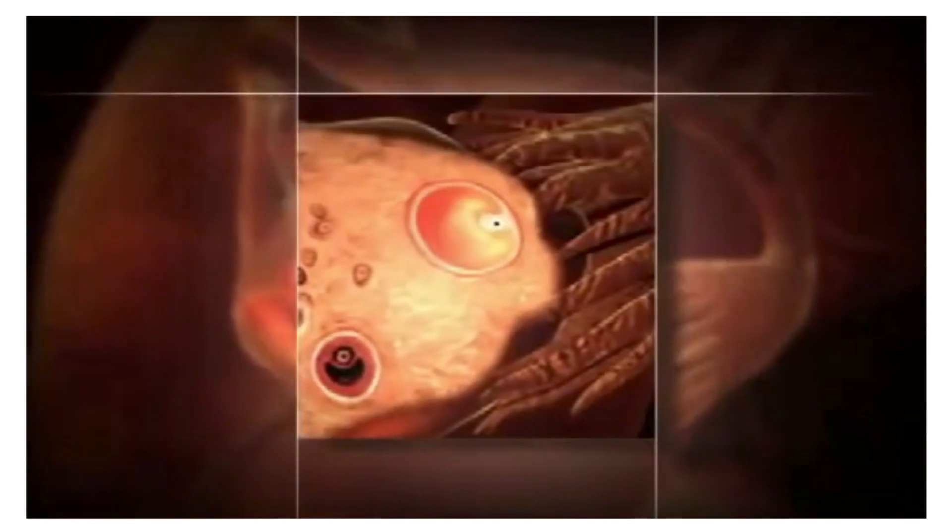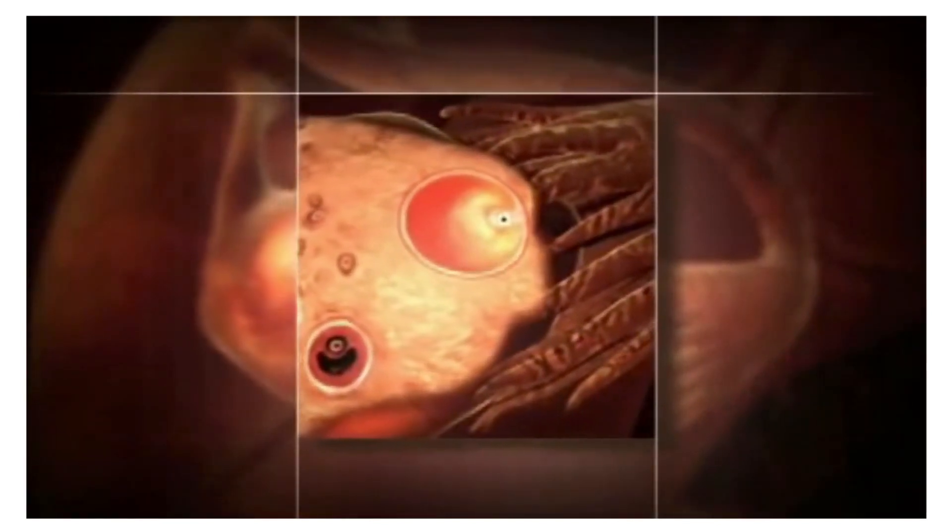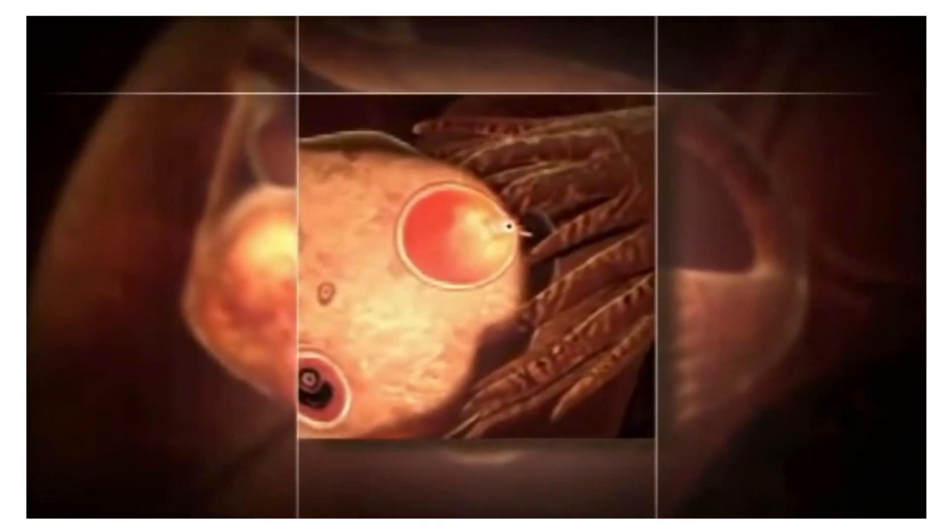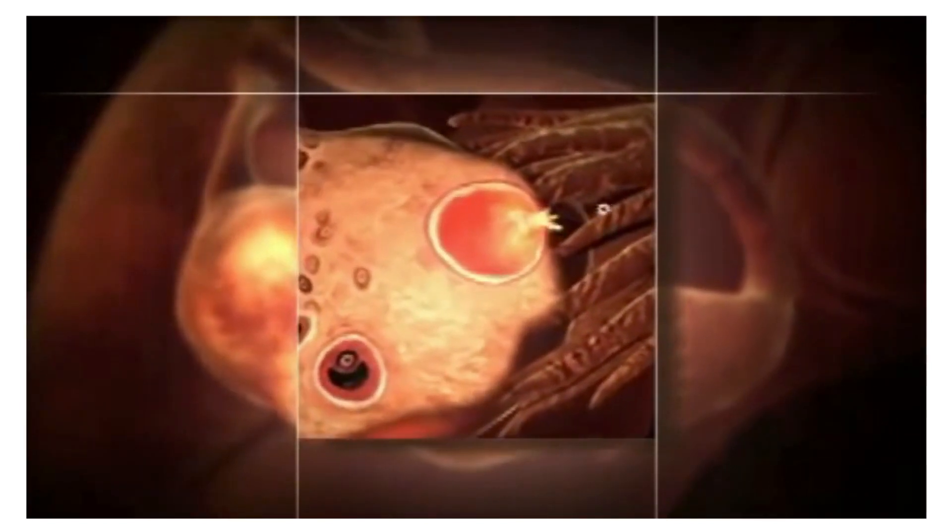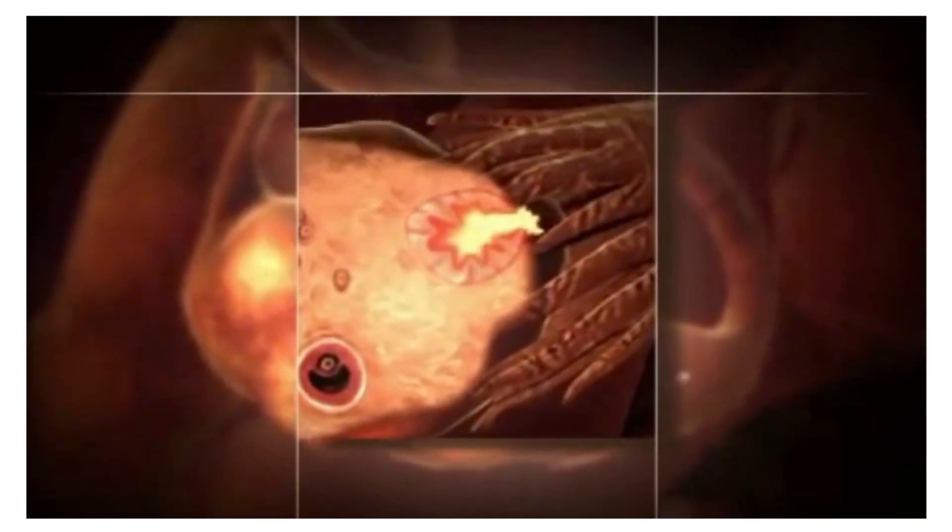a tiny sack within the ovary containing an egg grows to about the size of a grape. At a point midway in the cycle, this egg is released from the ovary and ovulation occurs. Ovulation is also regulated by hormones.